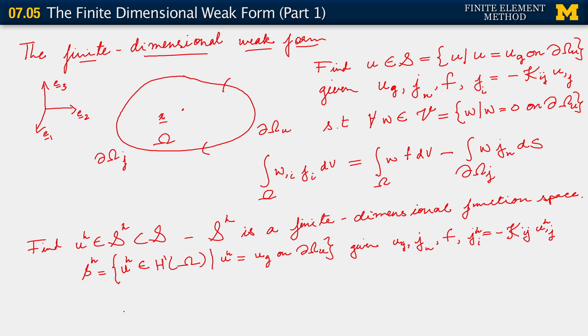So we're going to find u h in this sort of space, such that, for all w h in v h subset of v, and where v h consists of functions w h, also in H1 over omega, but satisfying the homogeneous Dirichlet boundary condition. So for all such w h, again, the finite dimensional version of our weak form is satisfied. And that takes on the form,